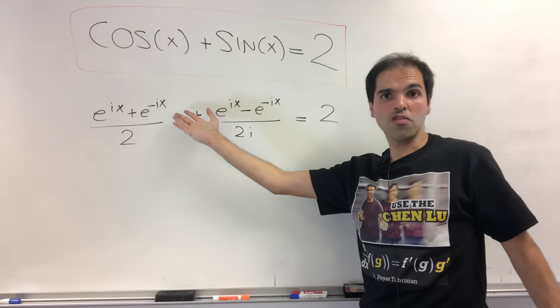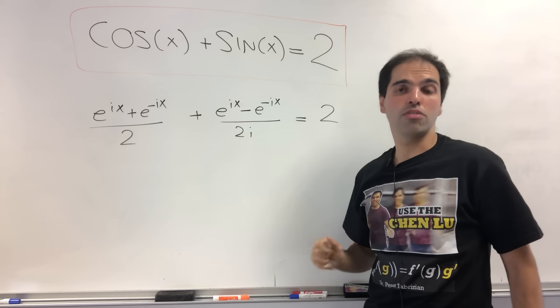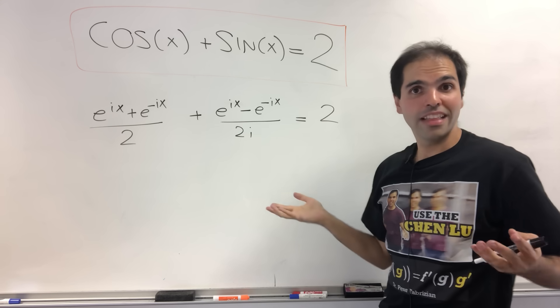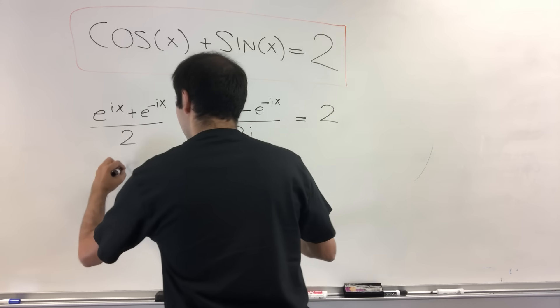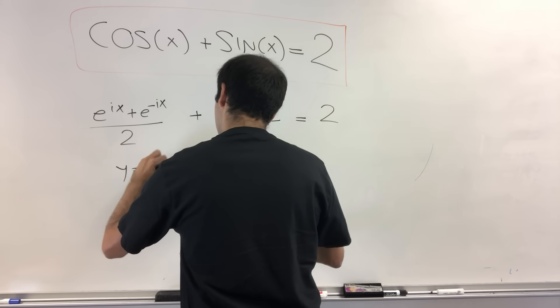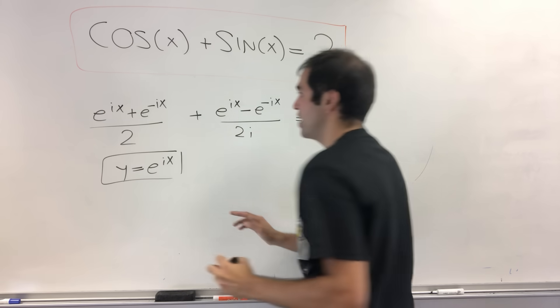The first order of business is to get rid of those ugly complex exponentials by just letting y be e^(ix). Then what does this equation become?